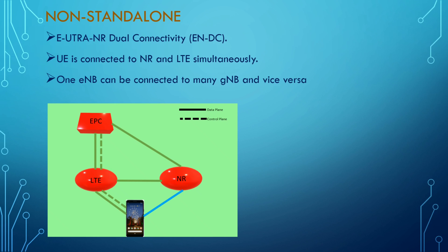We have two kinds of architecture: standalone and non-standalone. A few key points — EUTRA-NR dual connectivity is supported here. The UE is connected to both NR and LTE simultaneously, and one eNodeB can be connected to many gNodeBs.